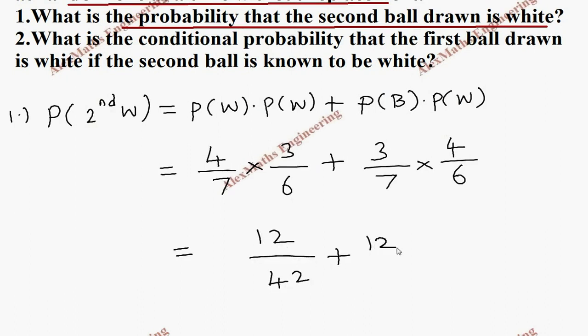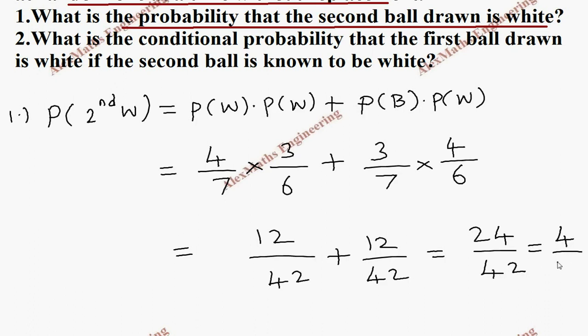Adding both cases: 12/42 plus 12/42 gives 24/42. Canceling by 6, the final answer is 4 out of 7.